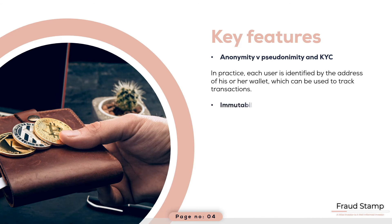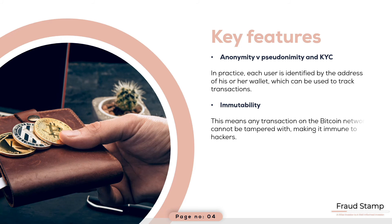Now let's discuss immutability. Since the network is transparent, the progress of a particular transaction is visible to all. Once that transaction is confirmed, it cannot be reversed. This is called immutability. This means a transaction on the Bitcoin network cannot be tampered with, making it immune to hackers. Most Bitcoin hacks happen at the wallet level, with hackers stealing the keys to hordes of Bitcoins rather than affecting the Bitcoin protocol itself.